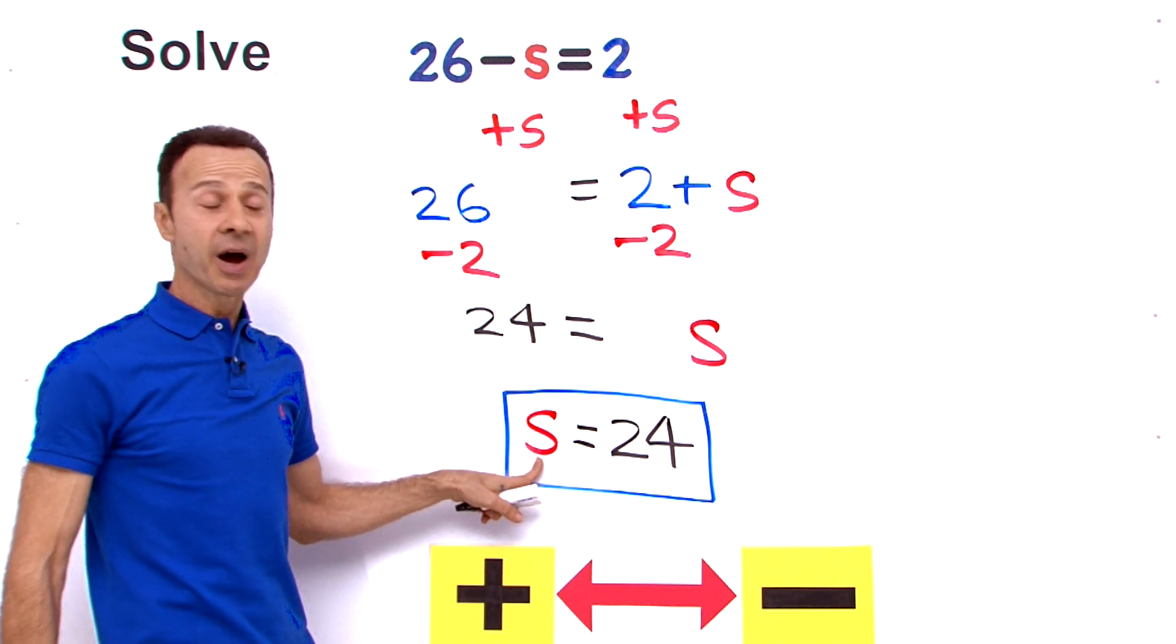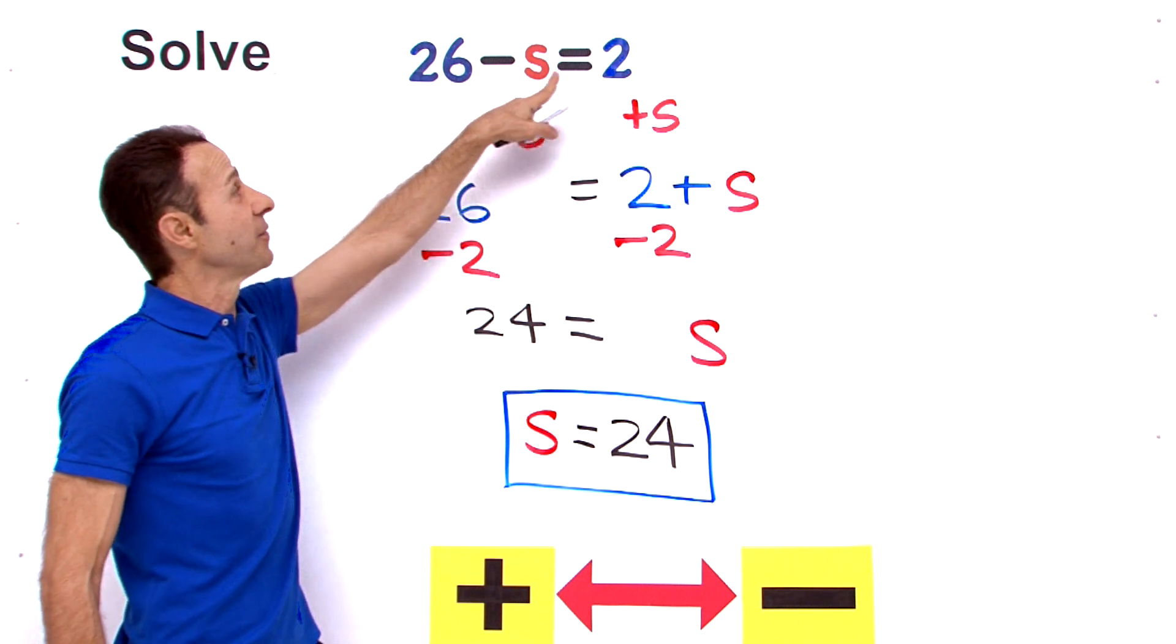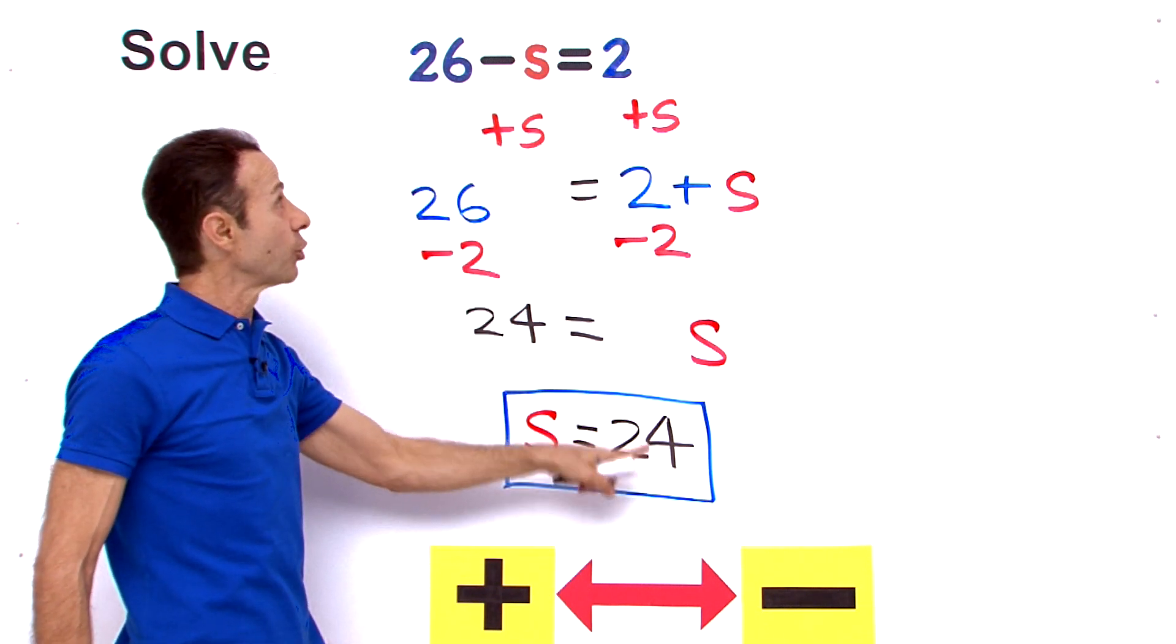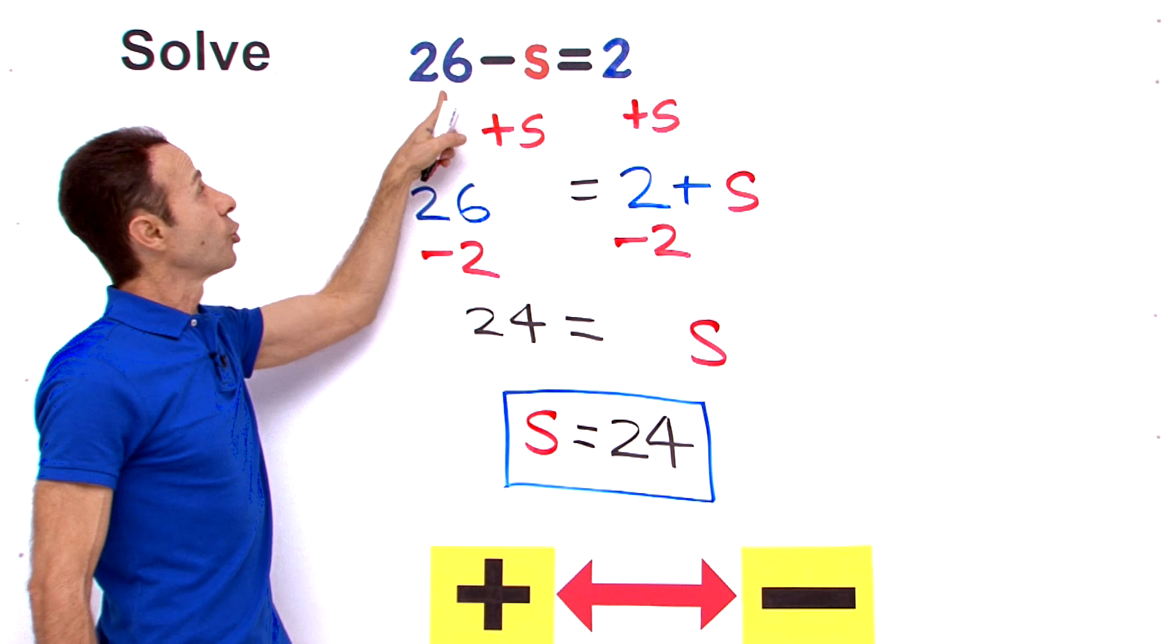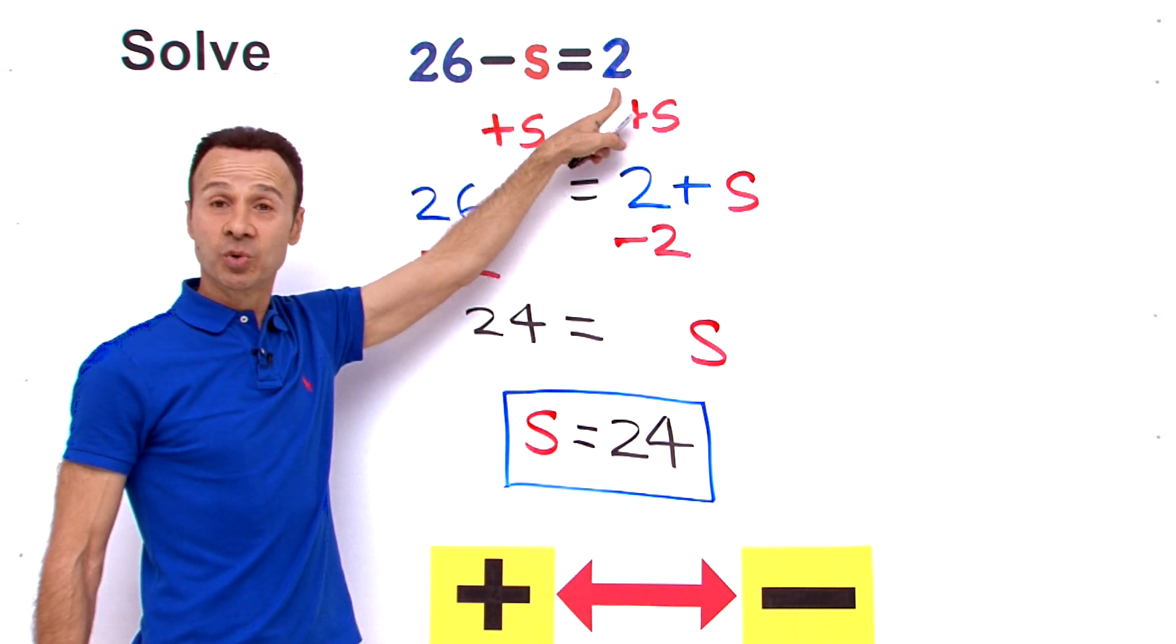Now if you want to check if you did it right, all you have to do is replace the 24 up here and see if you get the same answer. So if I take 24 and replace the s there, 26 minus 24 that equals 2. And that's a good way to check.